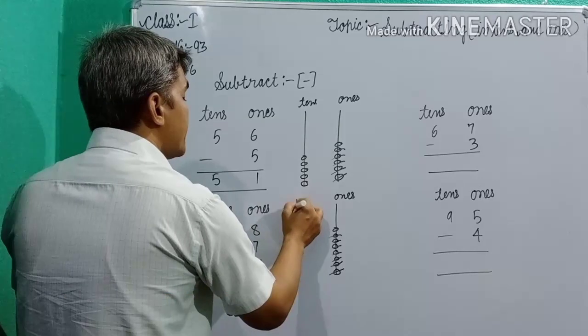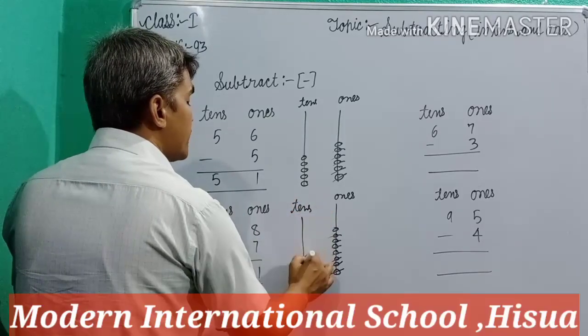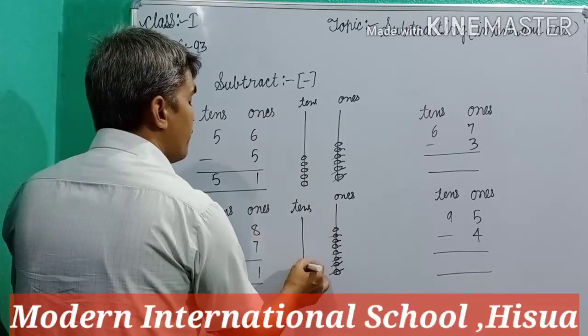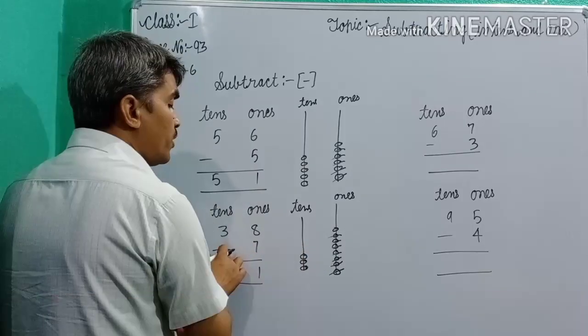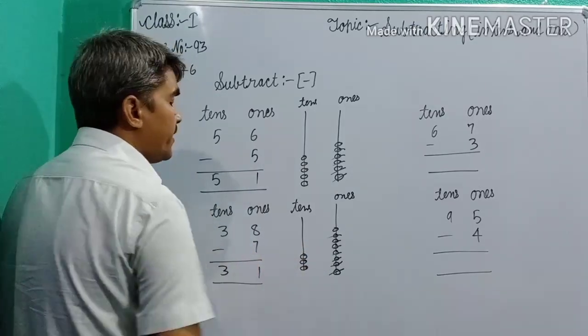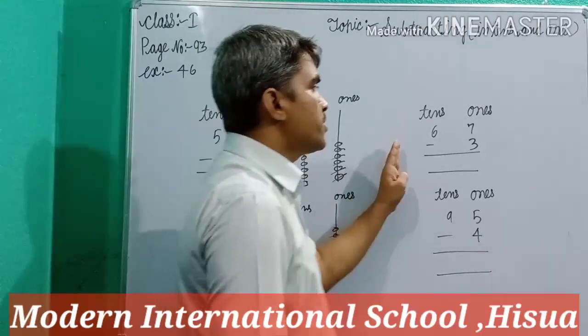And here, in tens for tens place, here 3, make 3 bits. Here, no any numbers, no any bits cancel. So, only you write here 3. Dear students, now, last question.